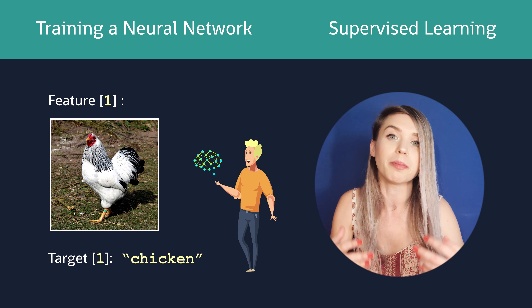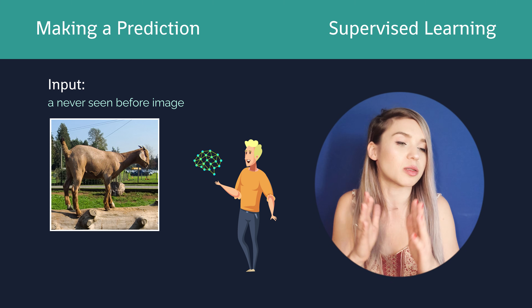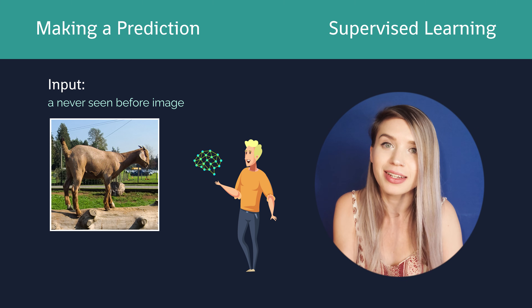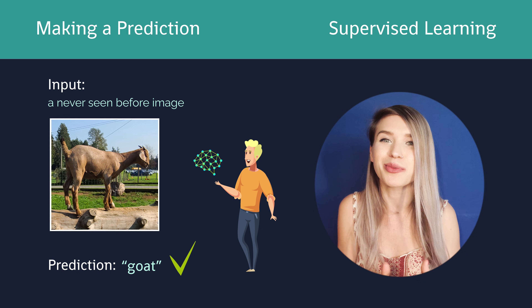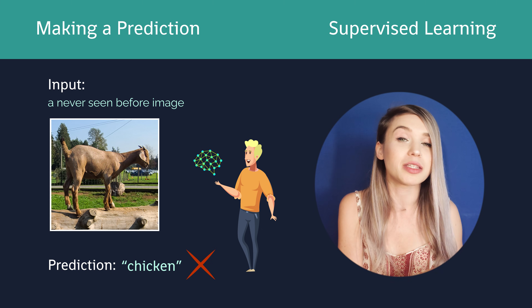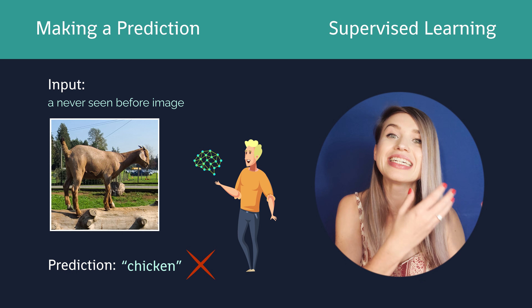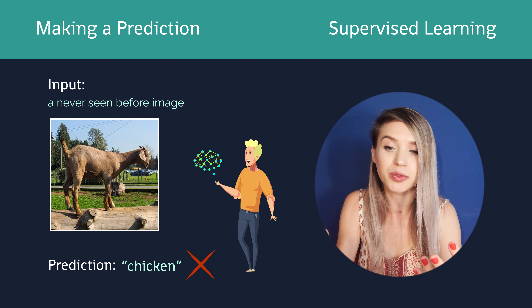Whenever we would like this network to make a prediction, we expose it to a picture of either a goat or a chicken that it has never seen before — a brand new picture — and show it to the network. Just like our kid, our network will be able to predict whether it's a chicken or a goat. If it gets it right, good job — our network is very accurate. If it gets it wrong, it might need a few more epochs, a few more visits to the farm, or the developer still needs to put a little more work into the code. And because us developers have so much control over these neural networks, that's the type of network I will teach you how to build on my channel.